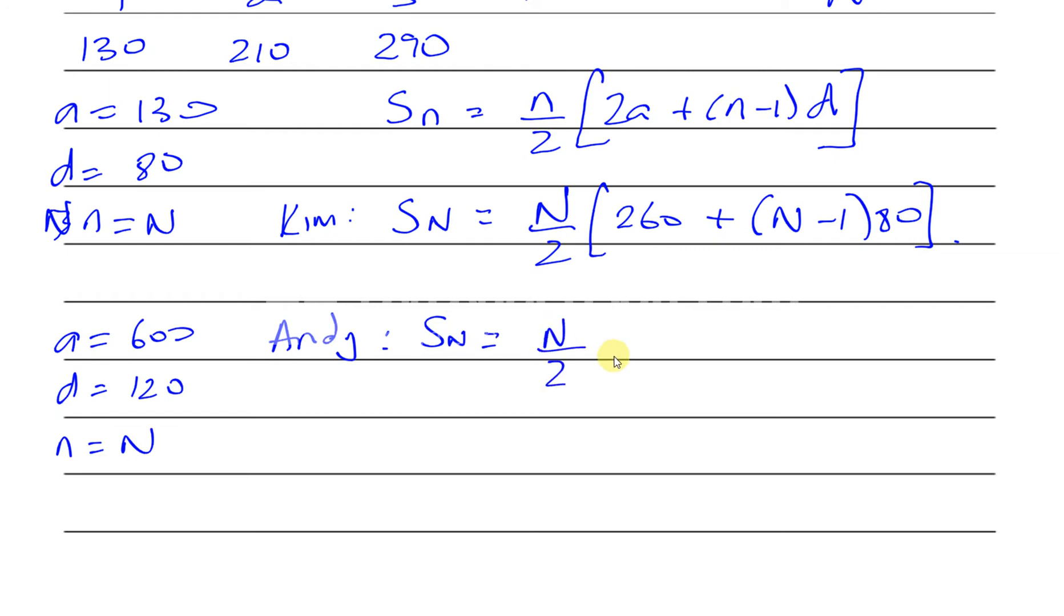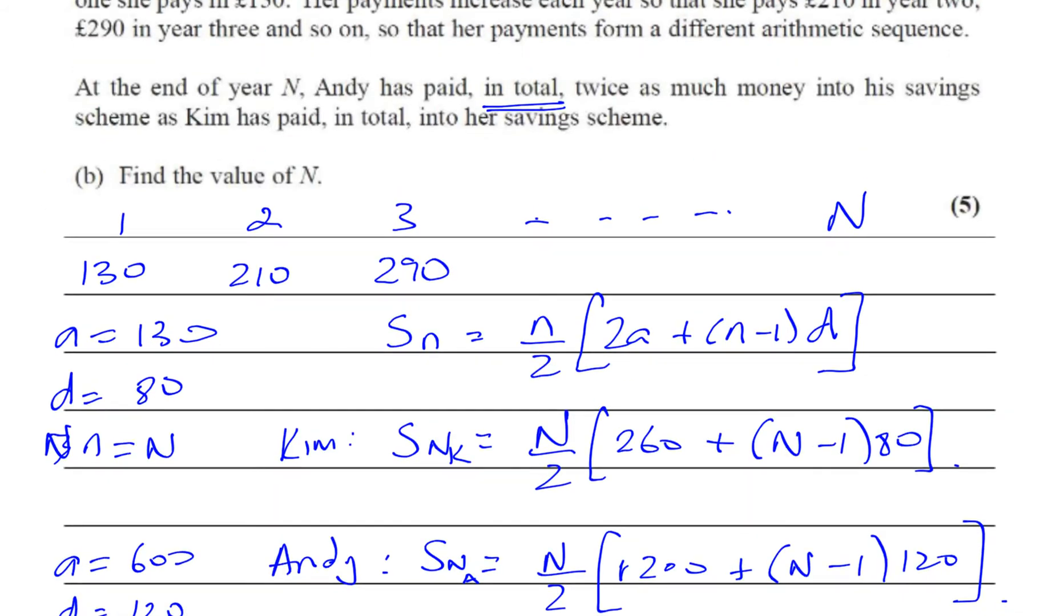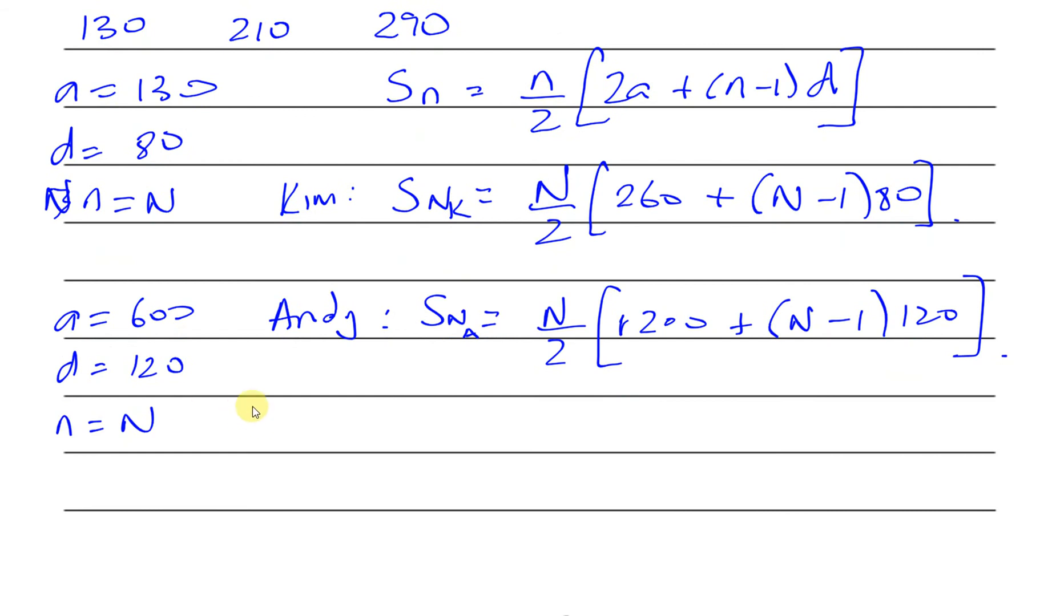This is for Andy, and the previous is for Kim. They're not the same - the N is the same but the total is not. Andy's is N/2 × [1200 + (N-1)120]. At year N, Andy has paid in total twice as much money as Kim, so the sum Andy paid equals twice the sum that Kim paid.